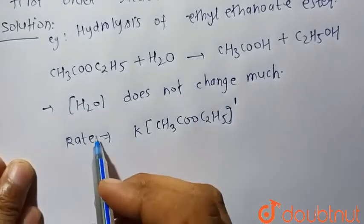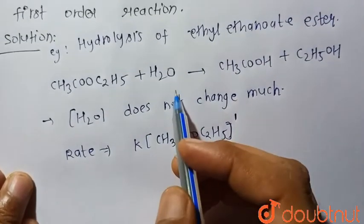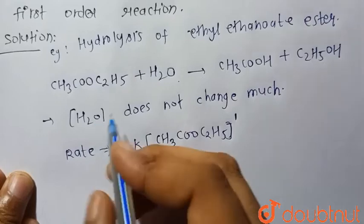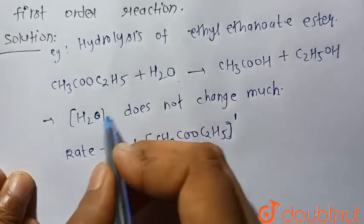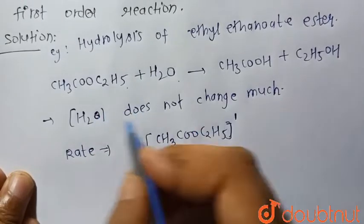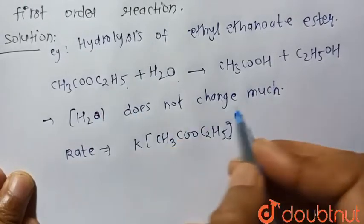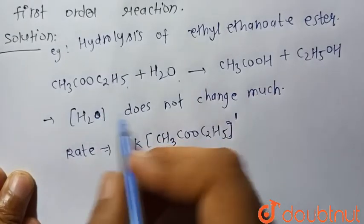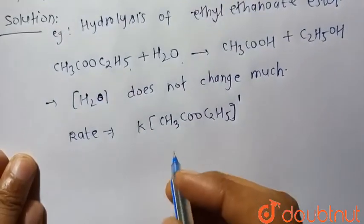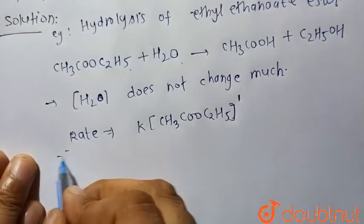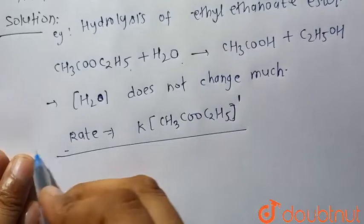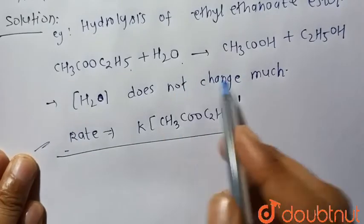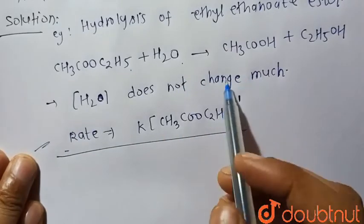That is, the rate is independent of the concentration of water because the concentration of water compared to ethyl ethanoate is very large, so it does not change much. So this is the rate expression for the hydrolysis of ethyl ethanoate ester.